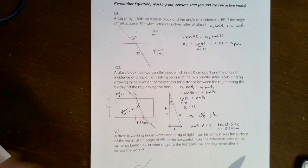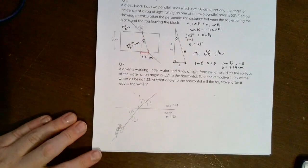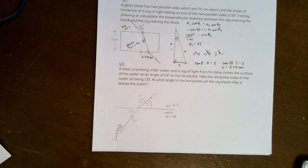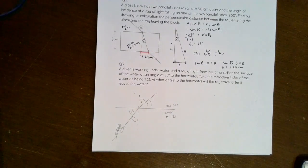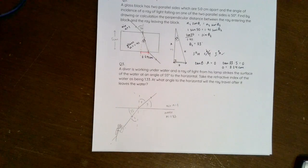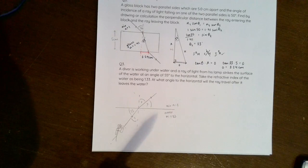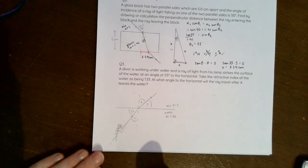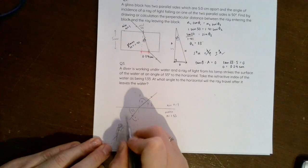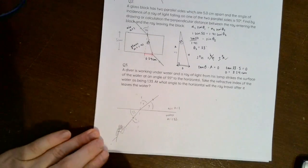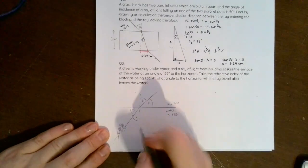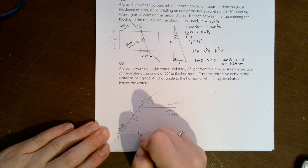Number 3, let me see if I can just push this up so that you can see. A couple of issues with question 3 that might trick you up. A diver is working underwater and a ray of light from his lamp strikes the surface of the water at an angle of 55 degrees to the horizontal.